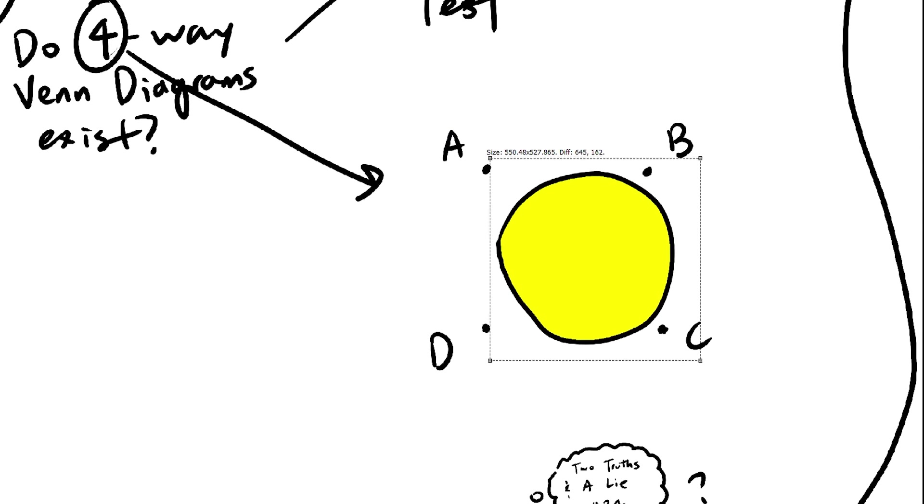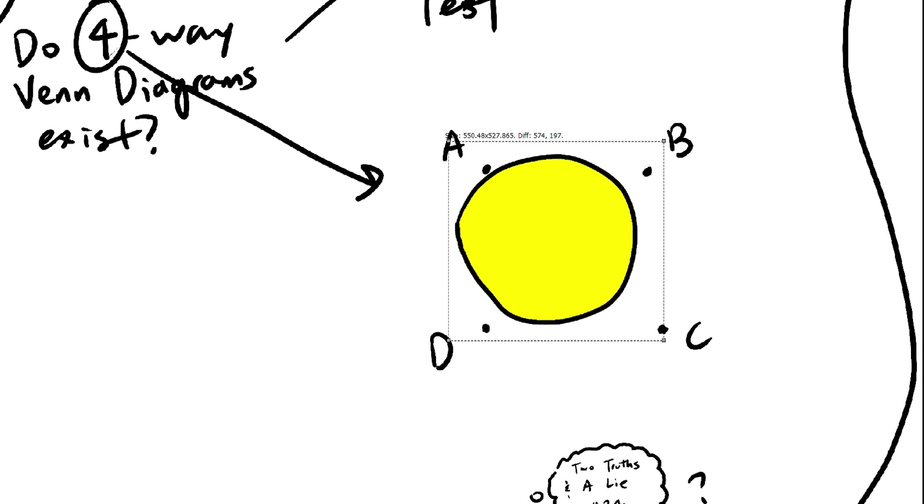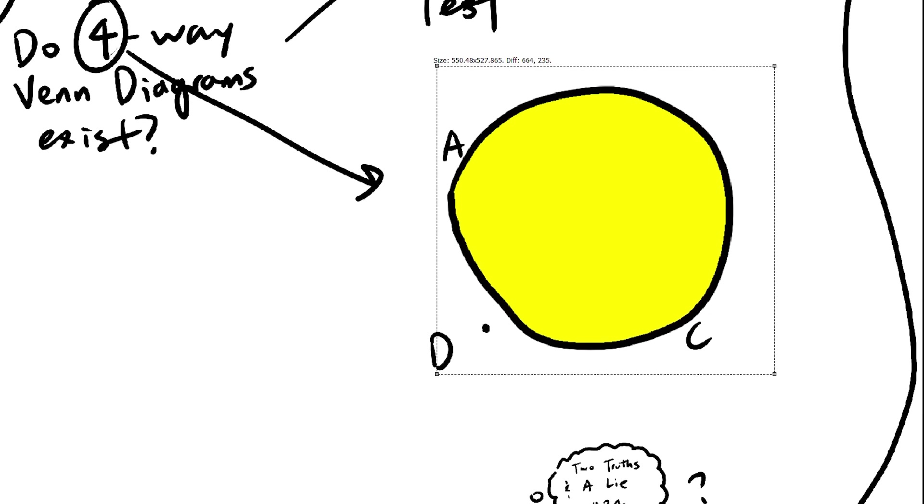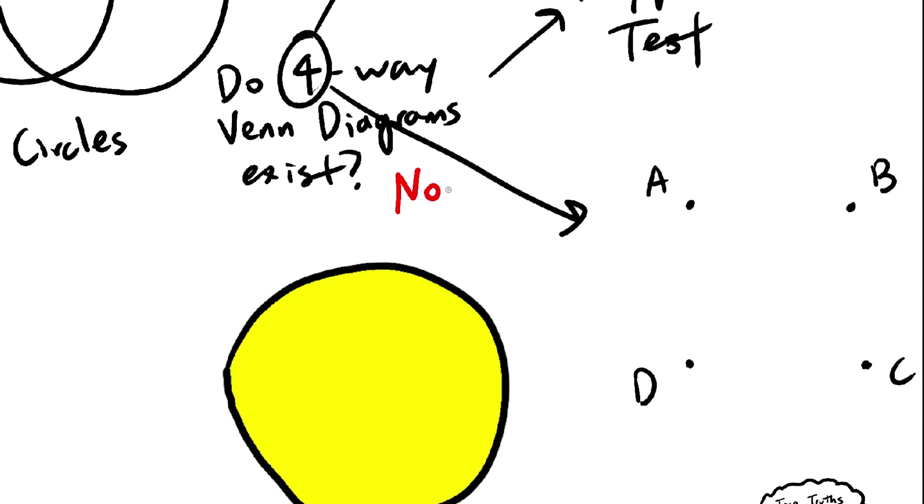Try messing around with this yourself to see why. But yeah, it's impossible. Therefore, a 4-way Venn diagram is not possible using circles.